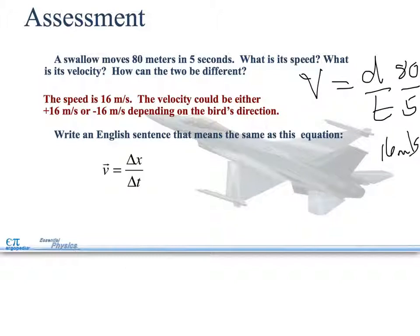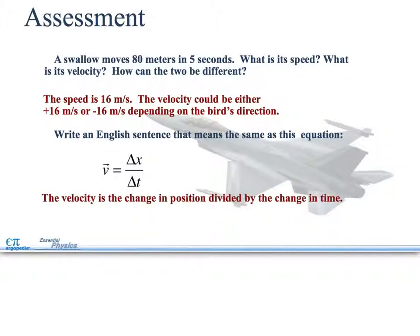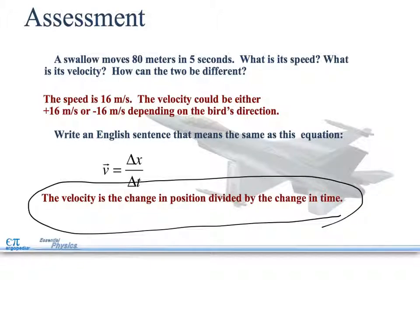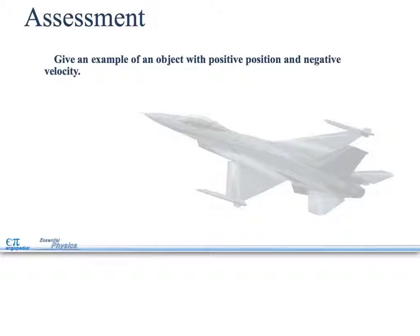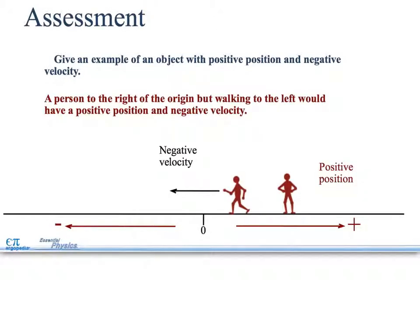The velocity could be either positive 16 meters or negative 16 meters depending on the bird's direction. We didn't mention which direction it is, so it could be either of those. The velocity is the change in position divided by the change in time. This is a great way to state this equation. Give an example of an object with positive position and negative velocity. Like the example I told you, we have positive position right here and negative velocity because it's heading the other way.